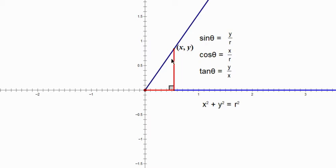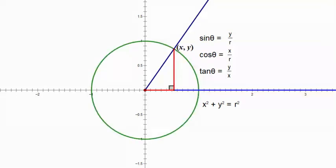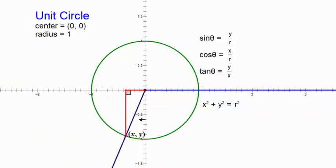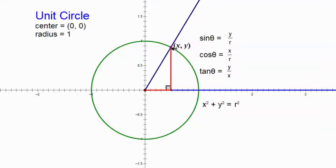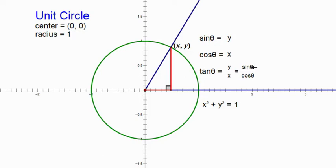Now let's say the point x-y is on the unit circle — the circle centered at the origin with radius 1. That's why we call it r: it's the radius, and it equals 1. So the sine is y over 1, which is just y. The cosine is x over 1, which is just x. The tangent is still y over x, and it's obvious now that tangent equals sine divided by cosine. And x squared plus y squared equals 1.